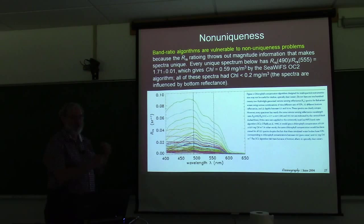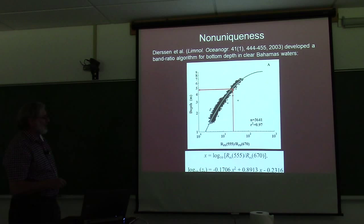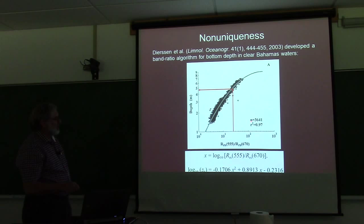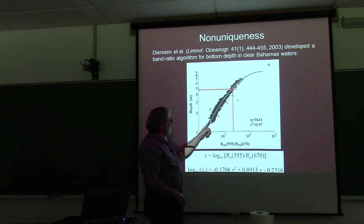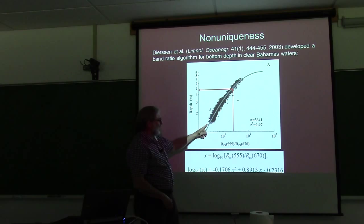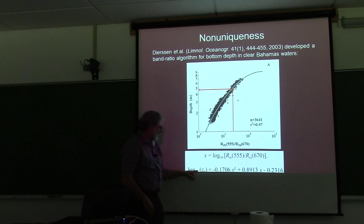Heidi Dearson, during a field experiment in the Bahamas in very shallow water down to about six meters, measured bottom depth and hyperspectral remote sensing reflectance. She found that plotting RRS at 555 to 670 versus depth gives a nice cloud of points, and she fit a quadratic curve: take the log of the ratio at those two wavelengths, plug into the best-fit quadratic, and get the bottom depth. Works pretty well for her data set.